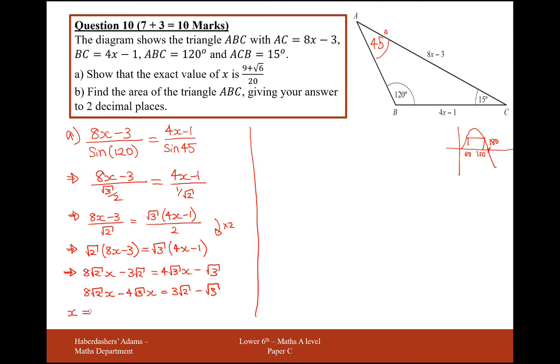Factorize out your x now. So x bracket, I'm factorizing here, 8 root 2 minus 4 root 3 will equal the right-hand side. And now we divide by what we've got in the bracket here. So it's going to be 3 root 2 minus root 3 over 8 root 2 minus 4 root 3.